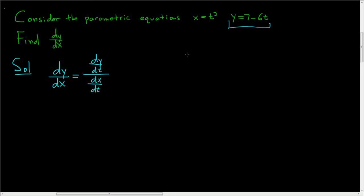So here's y. So all we have to do is take the derivative of y with respect to t, and that's just negative 6.